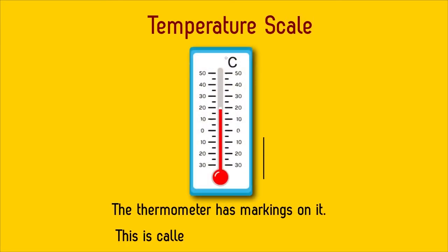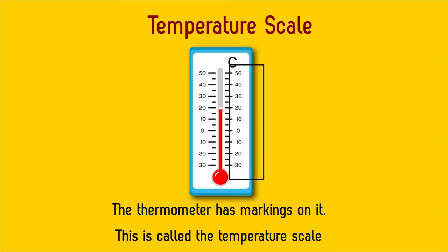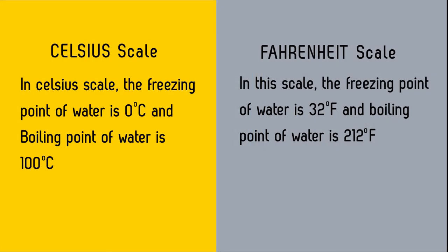Temperature scales. The thermometer has markings on it, which is called the temperature scale. One is the Celsius scale. In the Celsius scale, the freezing point of water is 0 degrees centigrade and the boiling point of water is 100 degrees centigrade. The second one is the Fahrenheit scale. In this scale, the freezing point of water is 32 degrees Fahrenheit and the boiling point of water is 212 degrees Fahrenheit.